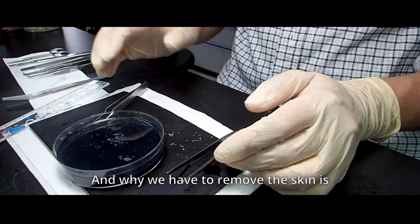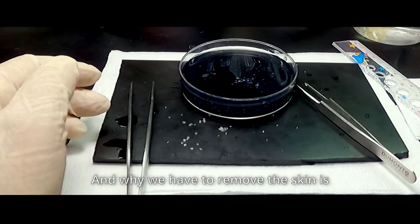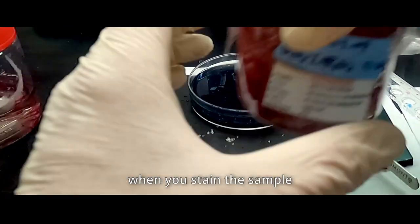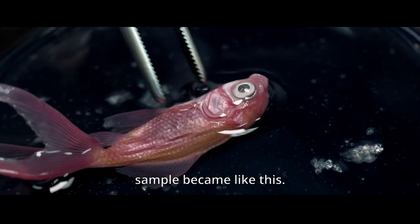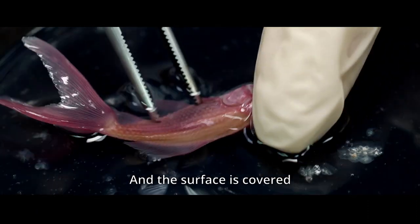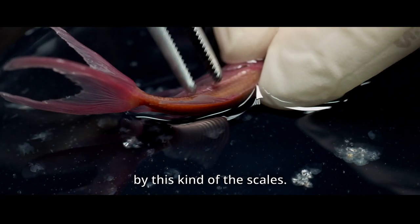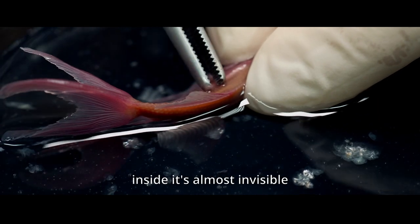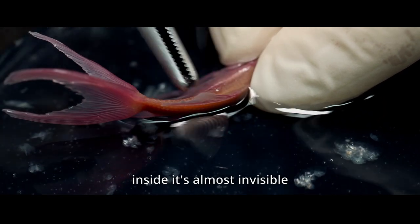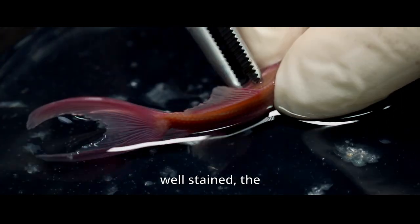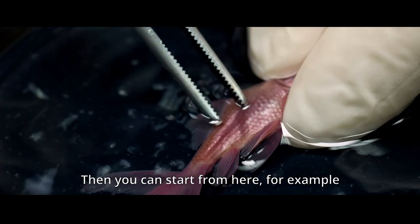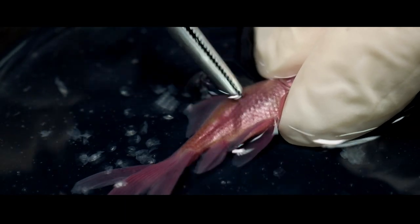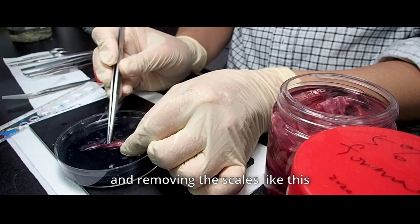And why we have to remove the skin is, when you stain the sample, like with alizarin red, the sample became like this. And the surface is covered by this kind of scales. If you want to see the inside, it's almost invisible. So then, because the surface is covered by the well-stained scale, the calcified scale. Then you can start from here. For example, like stain like this. And removing the scale like this is also one of the options.